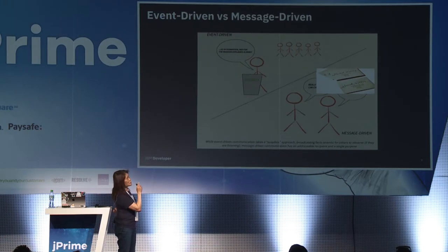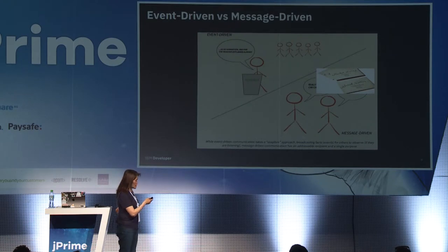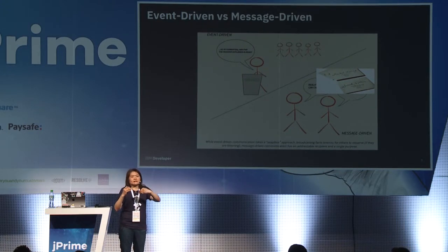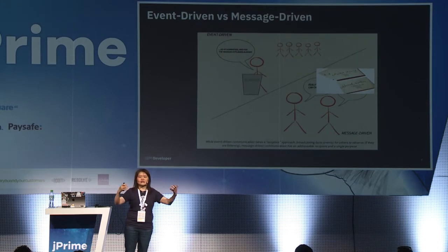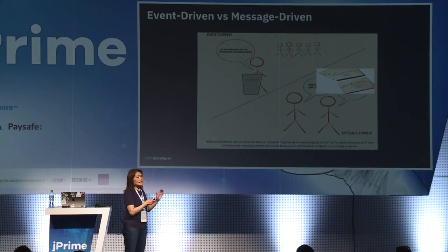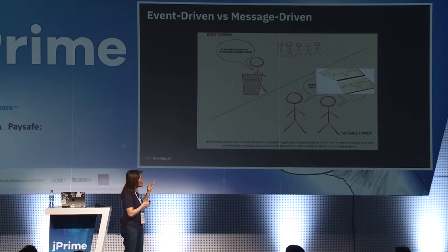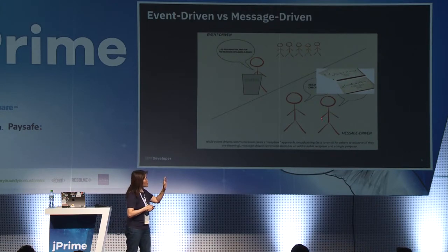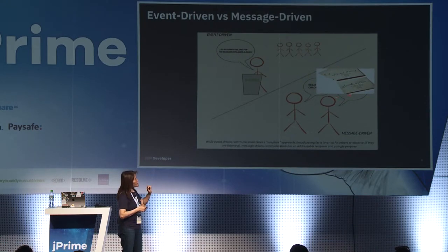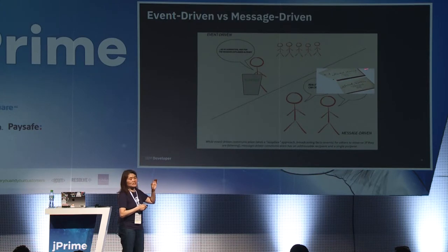I'll explain the difference between event-driven and message-driven. In event-driven systems, think of it like a soapbox — somebody broadcasting a message. The message goes out with no specific address; it's up to observers to react accordingly. However, in message-driven systems, there are specific addressable recipients — like two people talking to each other using an envelope. You need to have an address telling it where the message is going to go. That's message-driven versus event-driven.